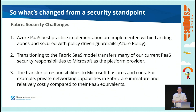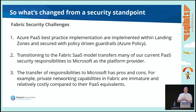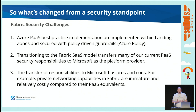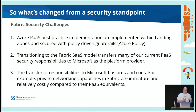In terms of the specific Fabric security challenges versus Azure PaaS — in Azure PaaS, best-practice implementations are deployed with landing zones secured by Azure Policy, providing guardrails. Transitioning to Fabric with a SaaS model transfers many of those responsibilities onto Microsoft as the platform provider. In the Azure PaaS world you've got full control; in Fabric you're delegating control to Microsoft. In some areas — for example, private networking — some capabilities in Fabric are a little less mature at the moment and relatively more costly.